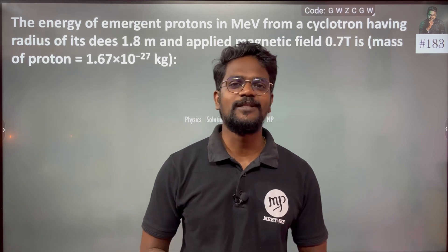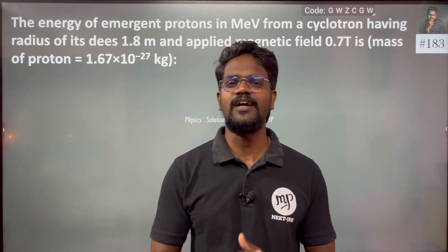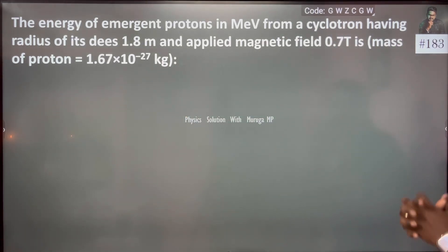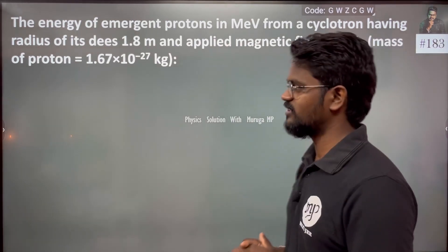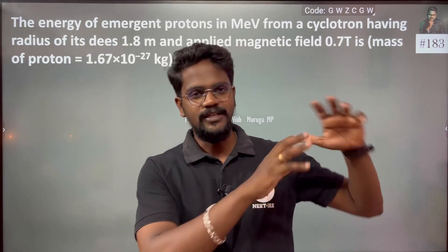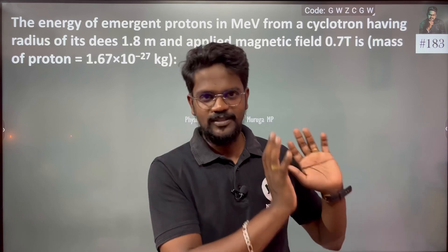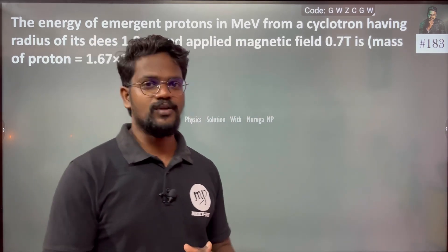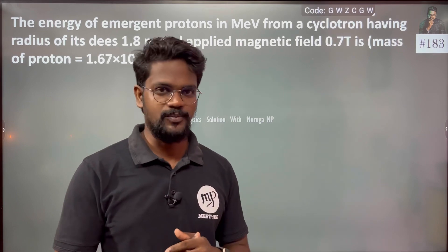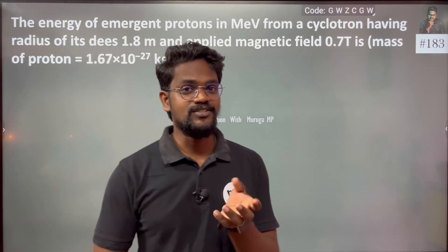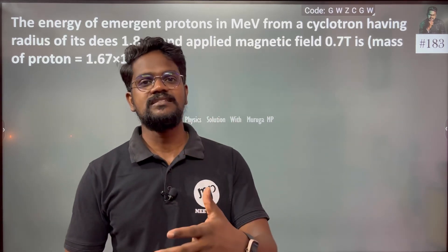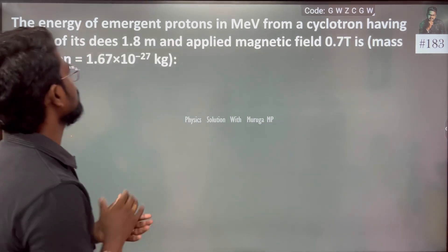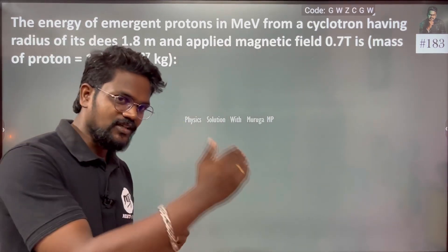Hi everyone. We are finding the energy of an emergent proton in mega electron volts from a cyclotron having a given radius. In a cyclotron, the charged particle is accelerated. The most important point is that cyclotron deals with charged particles — the charged particle in question is obviously the proton.